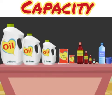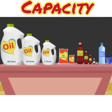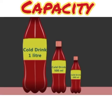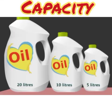We can measure different liquids using these measuring cans. You can see here a cold drink bottle of 200 mL, 500 mL and a 1 litre bottle. You also get oil in different measurements like a half litre pack and a 1 litre pack, and also big containers of 5 litres, 10 litres and 20 litres.